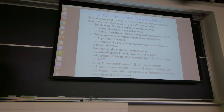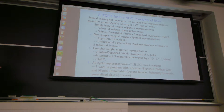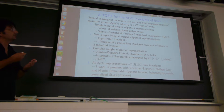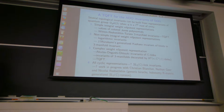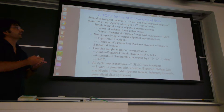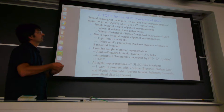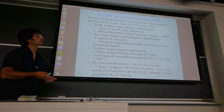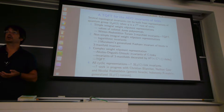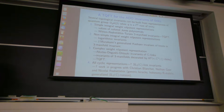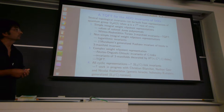For me, the Jones polynomial is a computation inside the category of representations of quantum SL2. For the Jones polynomial, you compute using the two-dimensional fundamental representation. When computing colored Jones polynomials, you use representations with integral weights — simple integral weight representations indexed by integers — and these integers index the colored Jones polynomials.